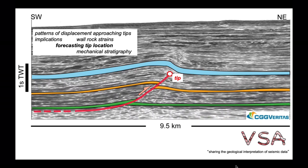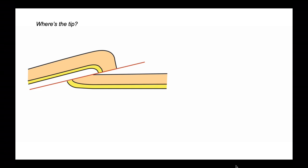So we've looked at how displacement variations on thrust faults can generate wall rock strains. Now let's look at a way of forecasting the position of the thrust tip. We can set this up with a diagram showing a deformed package of rocks — an orange layer sitting on top of a yellow layer — cut by a thrust fault, but we don't know where it terminates towards the right.